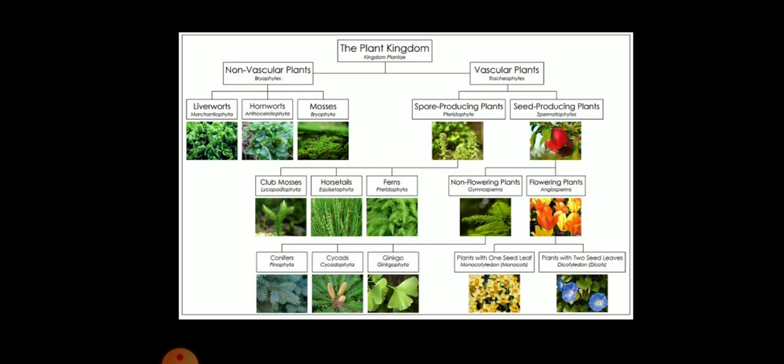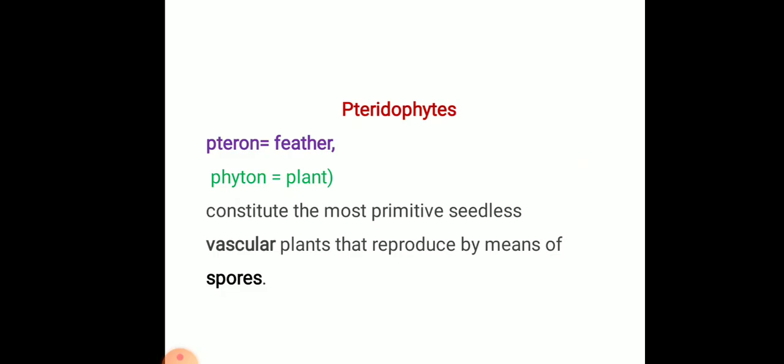Pteridophytes are again categorized into club mosses, horsetails, and ferns, whereas seed-producing plants are again divided into non-flowering plants and flowering plants. Non-flowering plants — for example, the gymnosperms — and flowering plants are the most advanced group, the angiosperms. In gymnosperms, it is divided into conifers, cycads, and ginkgo. In angiosperms: plants with one seed leaf are monocots or monocotyledons, and plants with two seed leaves are dicots or dicotyledons.